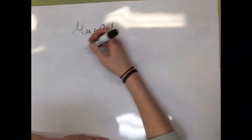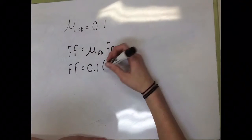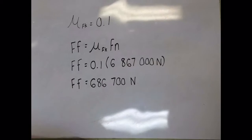We are using 0.1 as the coefficient of kinetic friction, so from there we can find the force of friction by multiplying the coefficient of friction by the normal force, which equals 686,700 newtons.